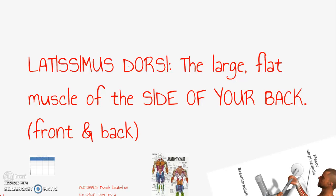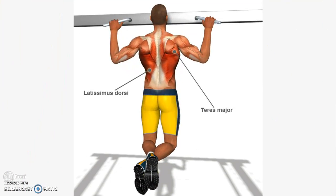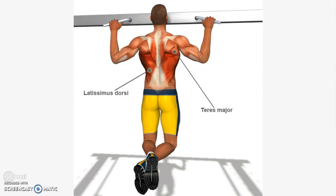The latissimus dorsi is a large flat muscle located on the side of your back. I always give the analogy: if you ever have an itch way on the side and you can't quite reach it, as you try to scratch and it looks like you're giving yourself a hug, that is your latissimus dorsi. It's more obvious on the back view, but it can be seen from the front view too. Pull-ups are one exercise that can work your lats. Not everyone can do pull-ups, so we have other exercises that can work your latissimus dorsi muscle as well.